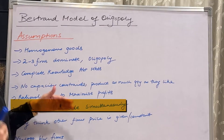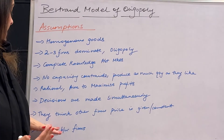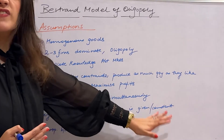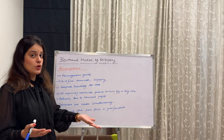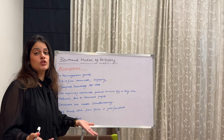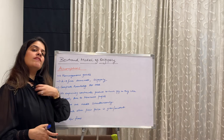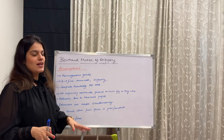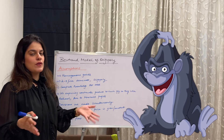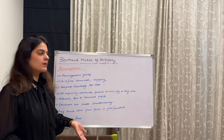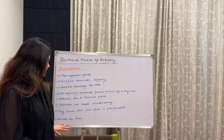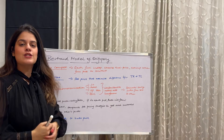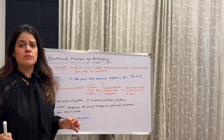The decisions are made simultaneously. They think the other firm's price is constant and given — it's a somewhat unrealistic assumption because in reality both firms will keep lowering prices. But this is an assumption we take. Lastly, there is no cooperation between the firms.